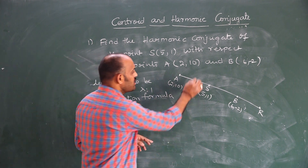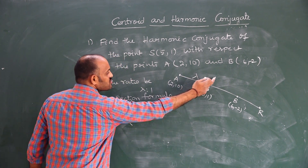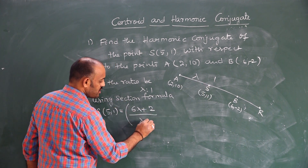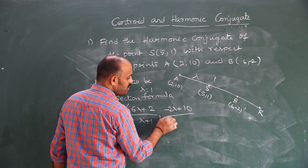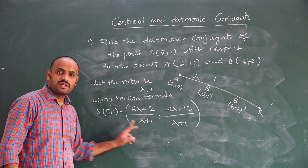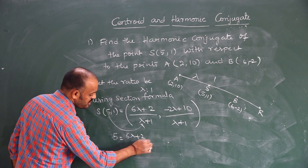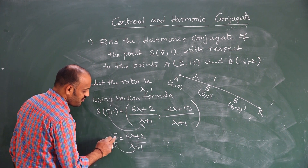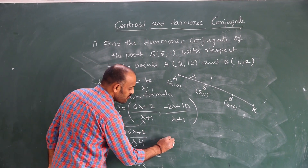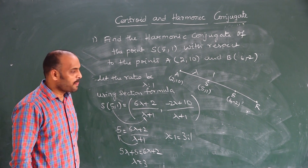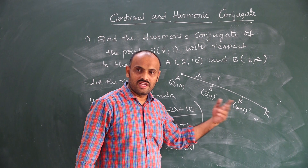S(5, 1) equals (λ·x2 + 1·x1)/(λ + 1), which gives (6λ + 2)/(λ + 1). Setting this equal to 5: 5(λ + 1) = 6λ + 2, so 5λ + 5 = 6λ + 2, therefore λ = 3. So the ratio is 3:1. Now, since S divides AB internally in ratio 3:1, R divides AB externally in ratio 3:1.